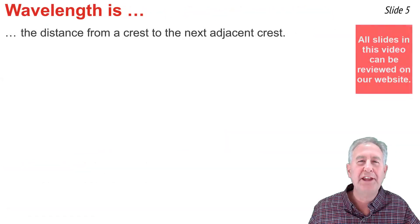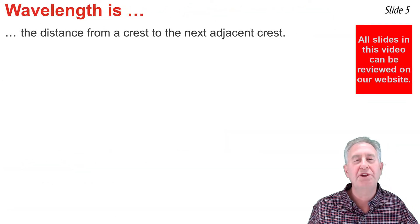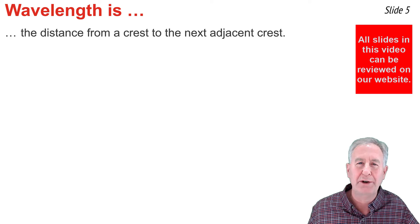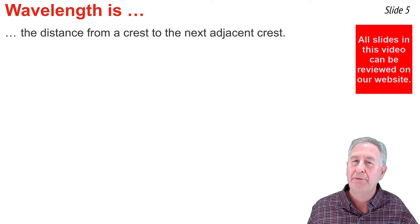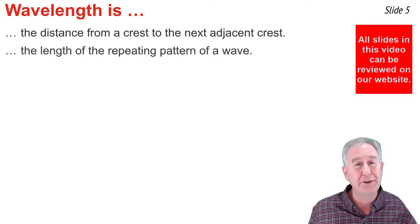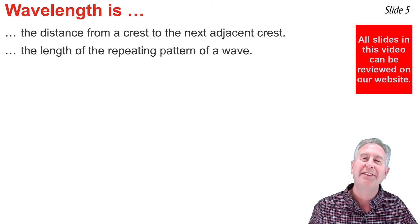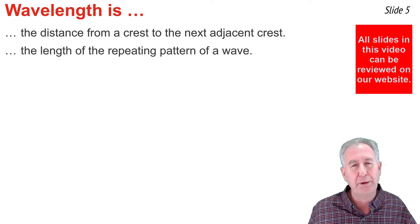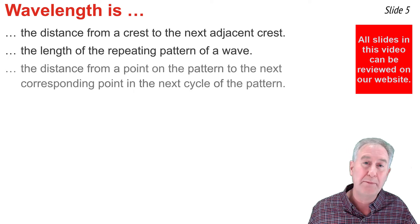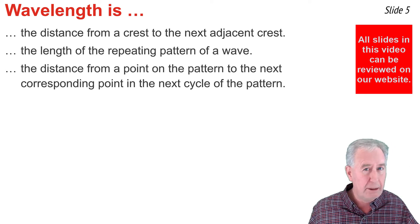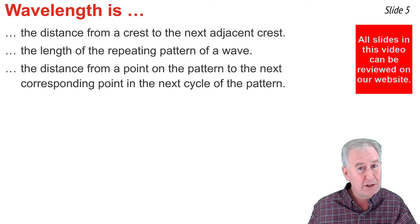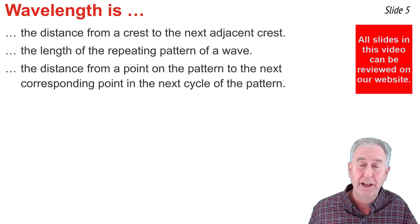The wavelength is the distance from a crest to the next adjacent crest, which works well for transverse waves. But for longitudinal waves that don't have crests, the more general definition is that wavelength is the length of the repeating pattern — the distance from any point on a wave to the corresponding point in the next cycle of the wave pattern.